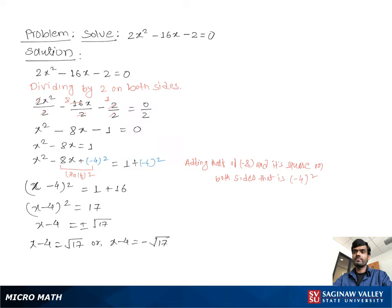Then we solve these two equations. We can get x = 4 + √17 or x = 4 - √17. And these are the solutions.